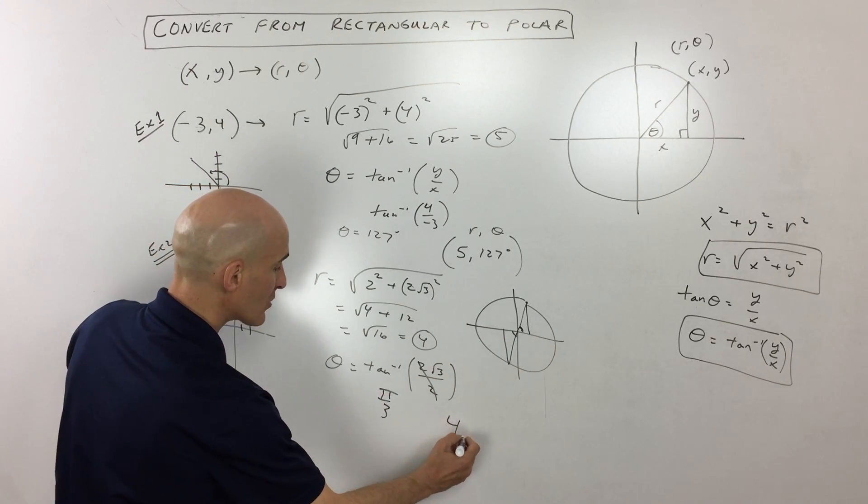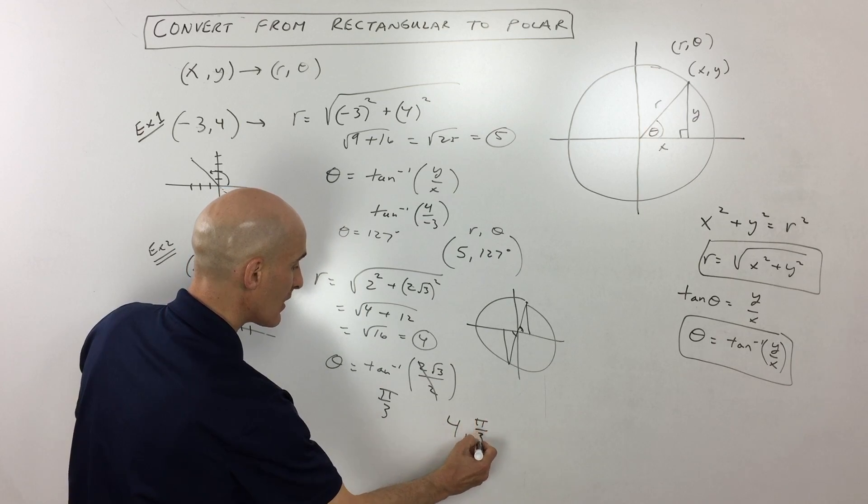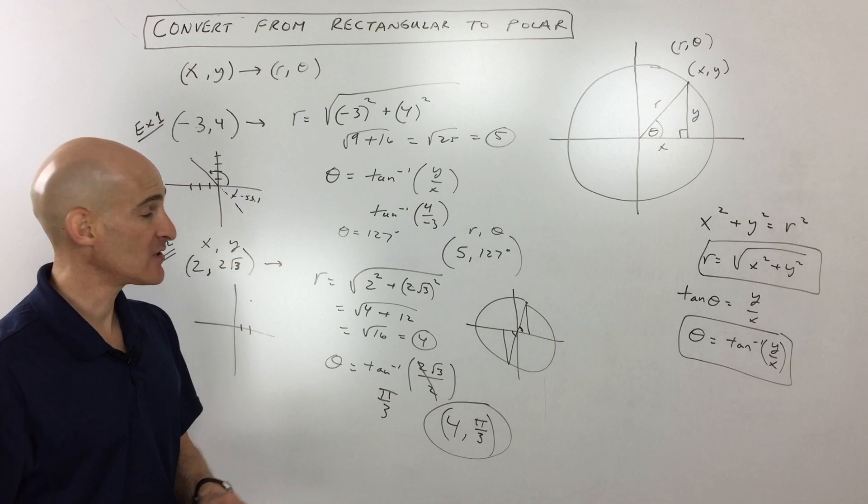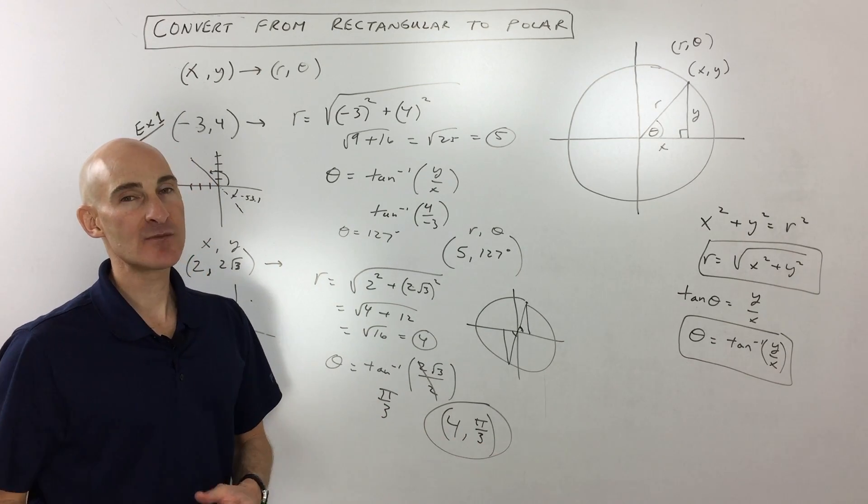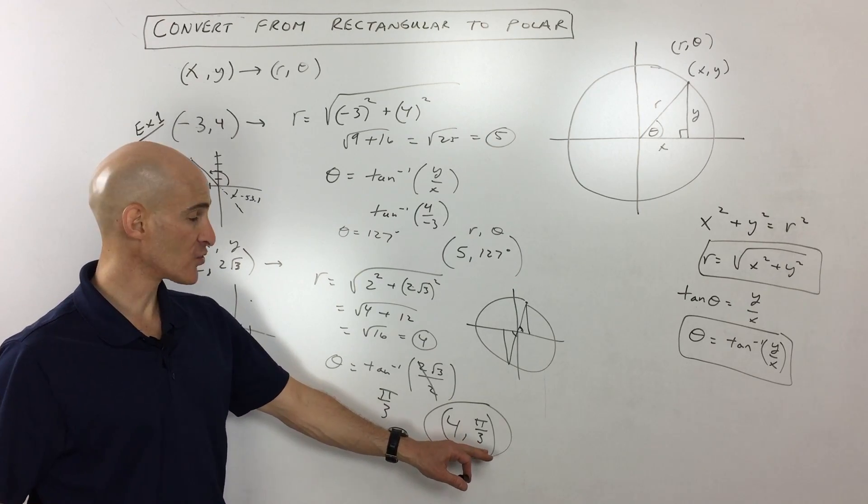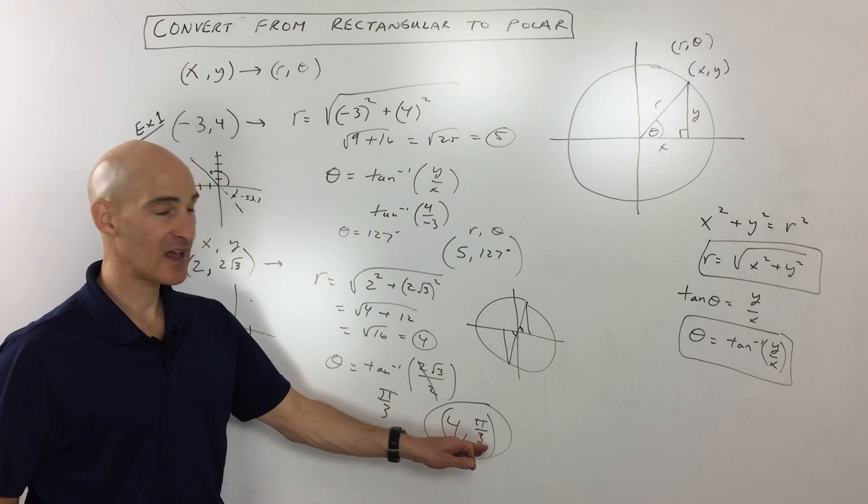So if we write our final answer, r, theta, 4, pi over 3. Sometimes students ask me, do I put it in radians or degrees? That's going to be up to your teacher. They'll let you know what form that they'd rather have it in, radians or degrees. But the key is the radius and the angle.